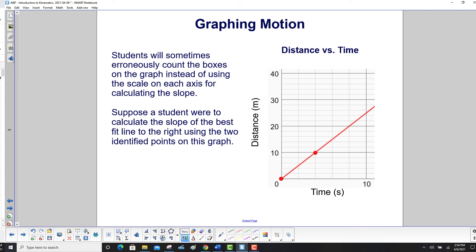Students will sometimes erroneously count the boxes on the graph instead of using the scale on each axis for calculating the slope. Suppose a student were to calculate the slope of the best fit line to the right using the two identified points on the graph.